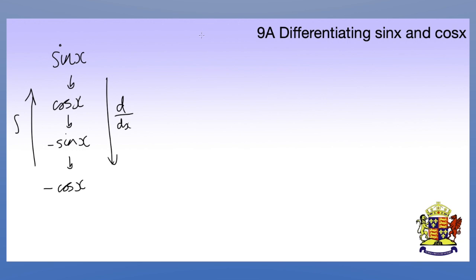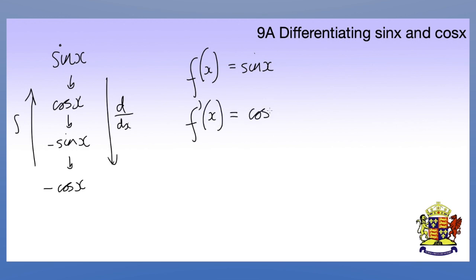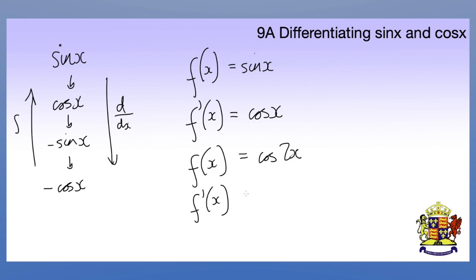You can just use this directly. For example, if f of x equals sine x, you don't need to do it from first principles — you can just say it's cos x. If f of x equals cos 2x, cos x becomes minus sine, and the 2 from the chain rule comes down as well, giving minus 2 sine 2x. You can differentiate a whole string of trig this way. It's important though that you also understand the graphical method and where this comes from.